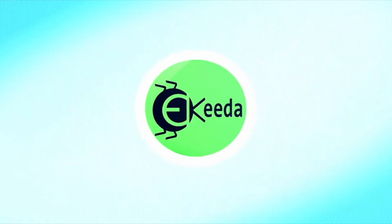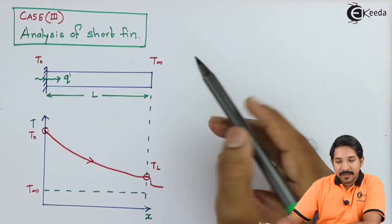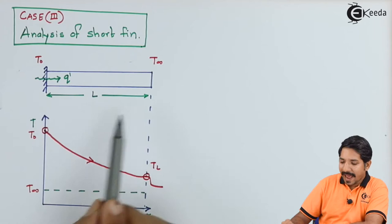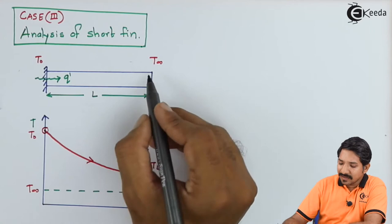Now in the third case, we have considered the fin is having some finite length, so it is a short fin. In this case, what we are going to consider is that at x equal to L, whatever heat that is conducted is entirely getting convected.